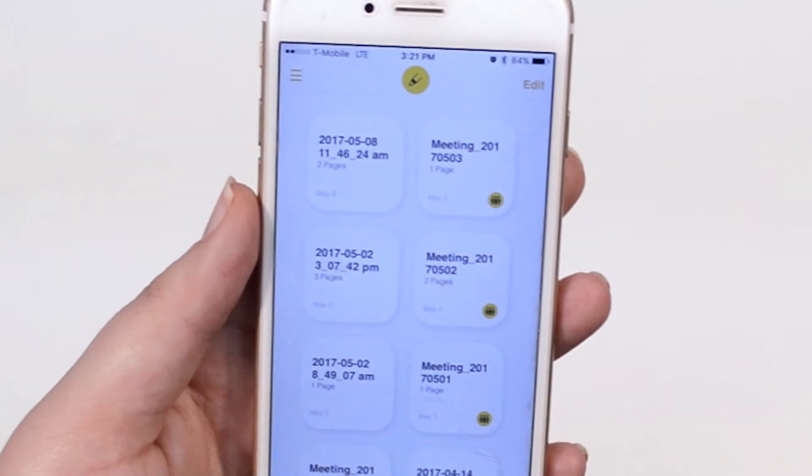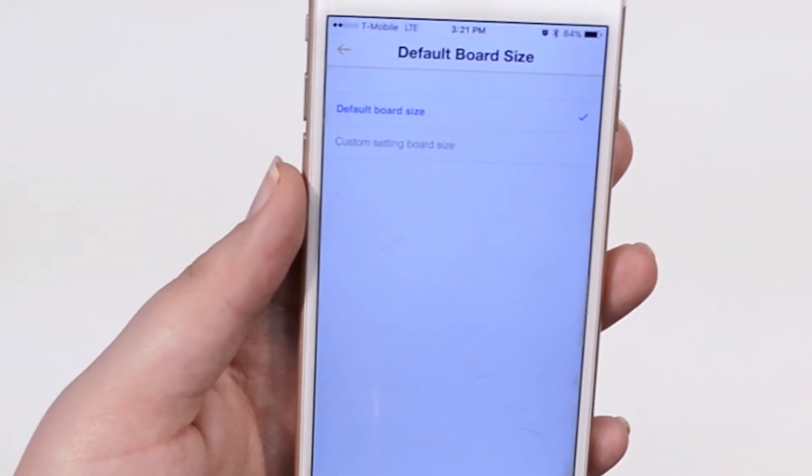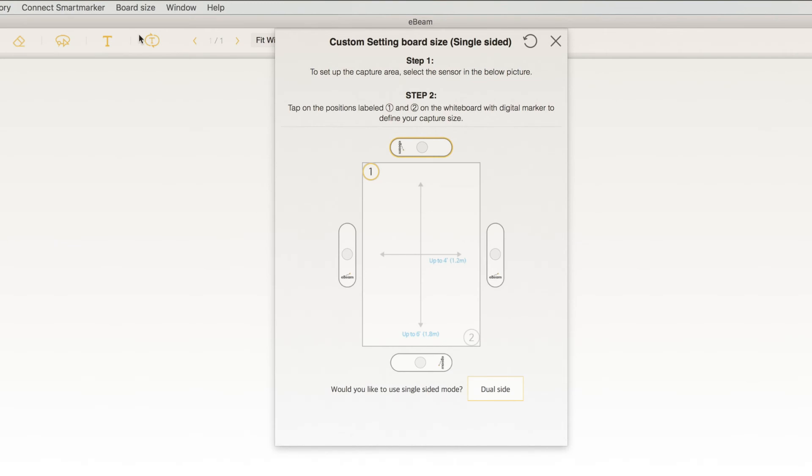The default board size is 8 feet wide by 5 feet high, but this is also customizable. To change the board size, make sure the sensor is connected. Then navigate to the settings on your smartphone or the board size menu on your computer and follow the instructions.